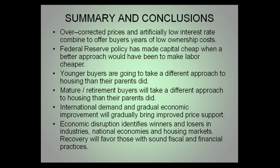So what does this all translate into? We believe housing prices in many markets and on a national basis are overcorrected — prices are too low because of our job losses. Artificially low interest rates and overcorrected prices combine to offer buyers years of low ownership costs. You can lock those down now for the entire life of the mortgage. Federal Reserve policy has made capital cheap, which is good for buyers and prospective homeowners. We believe a better approach would have been to make labor cheaper — doing more on the labor side would have ultimately helped the overall collective economy.